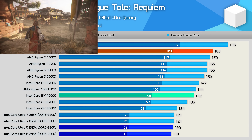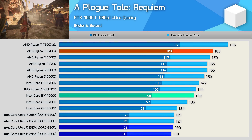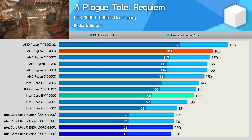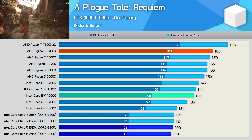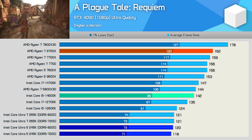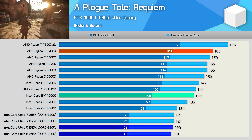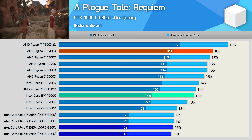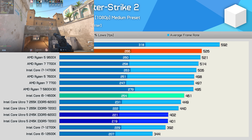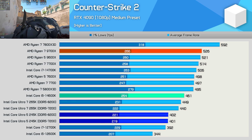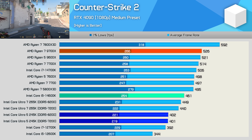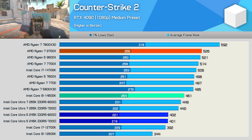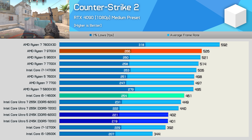There's more bad news in A Plague Tale: Requiem, where the 245K again manages to be slower than even the 12600K, trailing the 14600K by 17% and the 9700X by an insane 27%. Similarly, the 245K bombs in Counter-Strike 2, delivering 12700K-level performance at 400 fps — 13% slower than the 14600K and 24% slower than the 9700X.